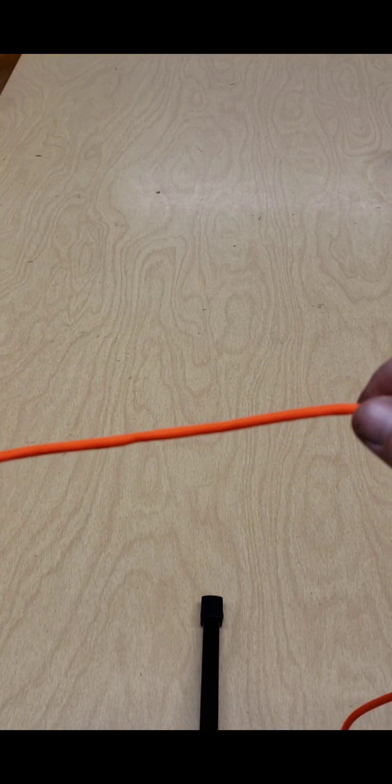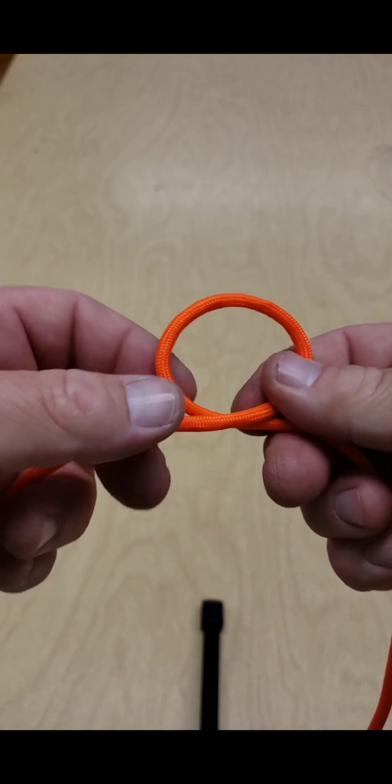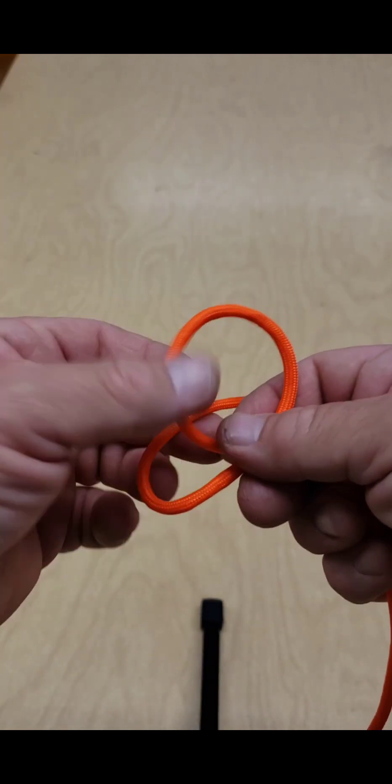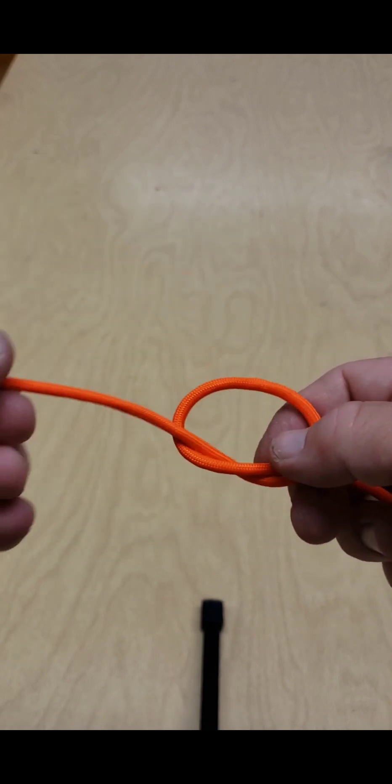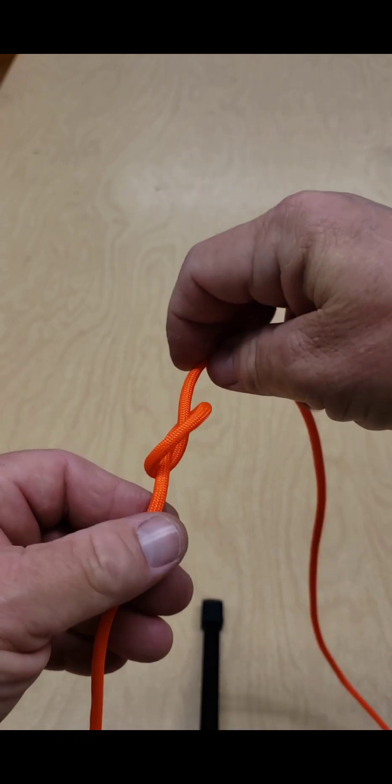Okay, the first thing you want to do is just a simple pass through. Put this on this side here. Make it through one time. You're going to have two sides of that loop. Look at it like this.